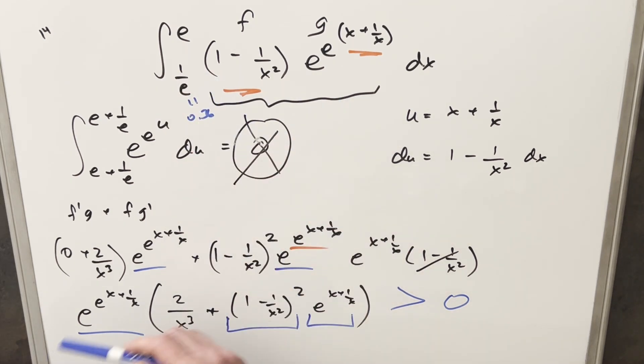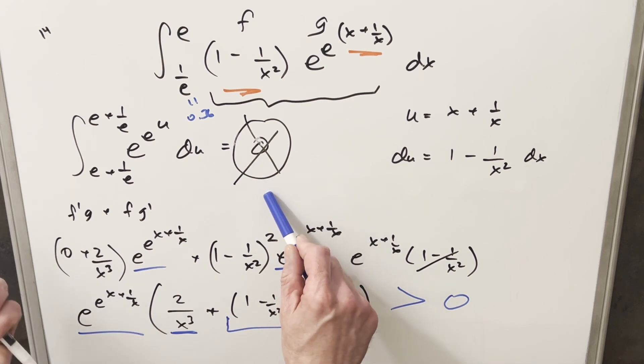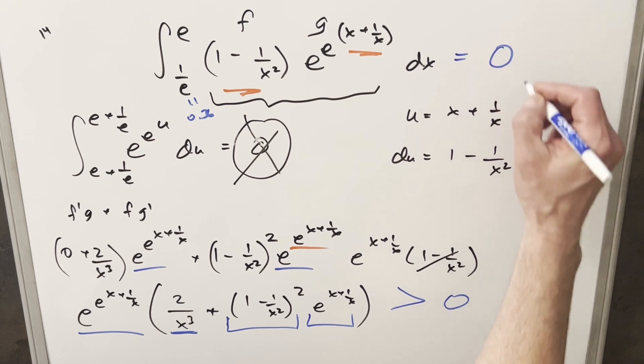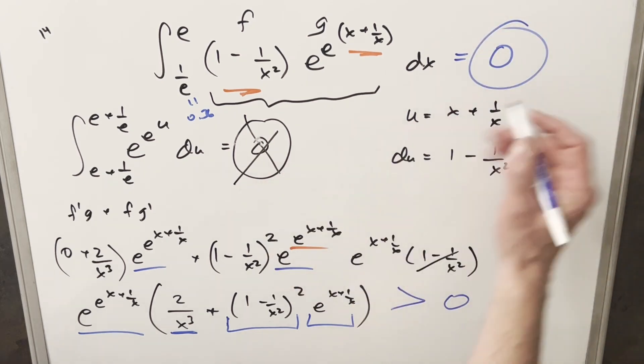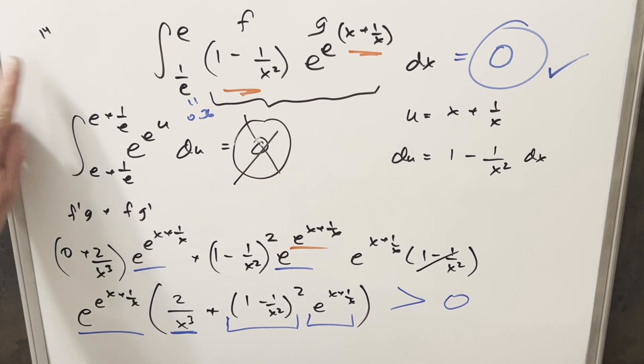So therefore, this function is always increasing. I didn't need to cross this out. This is actually legit this time. We can actually call this zero. So this is the one case where it works, and we get zero, and we can do this, and we're fine. Okay, there you have it. Alternative Method, MIT 2024 Problem 14. Thanks everyone for watching. Have a good day.